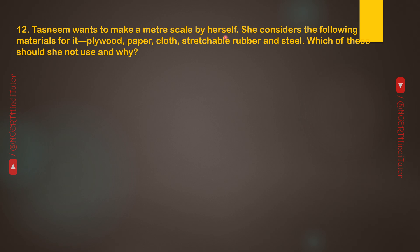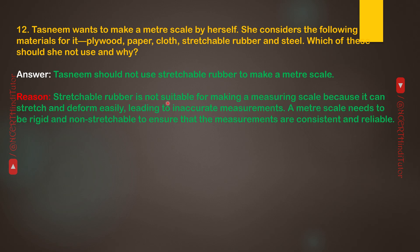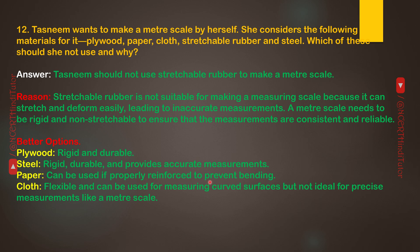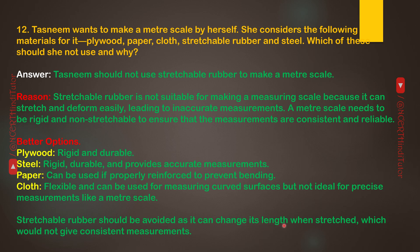Question 12: Tasneem wants to make a meter scale. She considers: plywood, paper, cloth, stretchable rubber, and steel. Which should she not use and why? Answer: Tasneem should not use stretchable rubber, because it can stretch and deform easily, leading to inaccurate measurements. A meter scale needs to be rigid and non-stretchable for consistent and reliable measurements. Better options: plywood and steel are rigid and durable. Paper can be used if reinforced. Cloth is flexible and not ideal for precise measurements. Stretchable rubber should be avoided as it can change length when stretched.